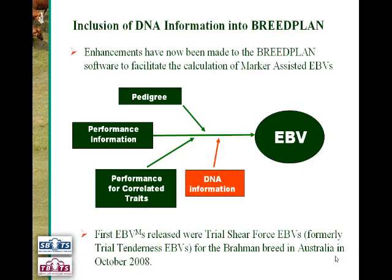The last thing to cover is the next phase of BreedPlan technology — including DNA test information into BreedPlan, the next generation of analysis. Currently, as shown by the green boxes on the diagram, EBV calculation takes into account pedigree information, direct performance measures for traits, and performance on correlated traits. Enhancements have been made to the BreedPlan software to facilitate inclusion of DNA information, so that marker-assisted EBVs can be calculated taking into account pedigree, performance, correlated traits, and DNA information — producing the highest possible accuracy.